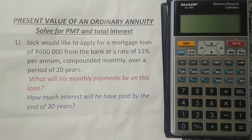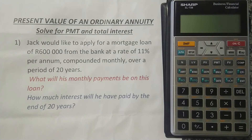Welcome to Countards. In this lesson, we're going to be looking at how to calculate the present value of an ordinary annuity, but we're going to focus on how to solve for payment as well as the total interest. So if you want to know what the payment is for the present value of an ordinary annuity, as well as total interest, you will be able to find out in this lesson.